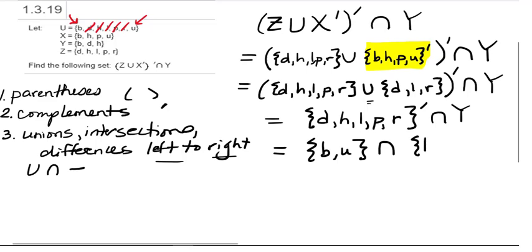Now we write down what Y is, which is {b, d, h}. Intersection means we want whatever's in common between the two sets. So the only element that appears in both sets is b. So our intersection results in the set containing only {b}.